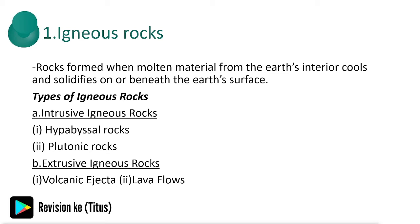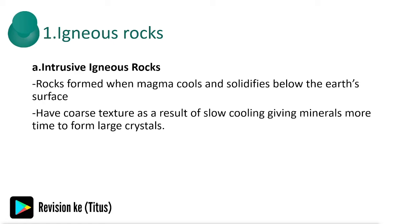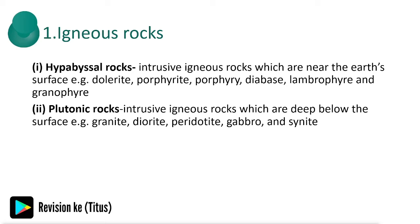Igneous rocks are formed when molten material from the earth's interior cools and solidifies on or beneath the earth's surface. There are two types: intrusive and extrusive igneous rocks. Intrusive igneous rocks are formed when magma cools and solidifies below the earth's surface. They have a coarse texture as a result of slow cooling, giving minerals more time to form large crystals. We have hypabyssal rocks, which are intrusive igneous rocks near the earth's surface, and plutonic rocks, which are intrusive igneous rocks deep below the surface.